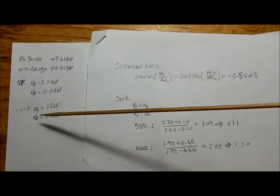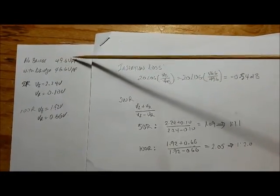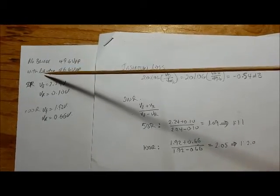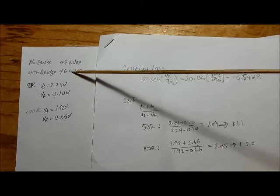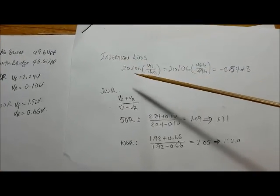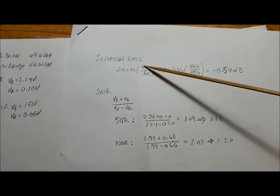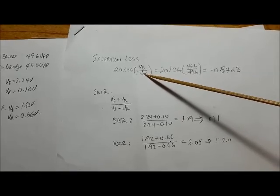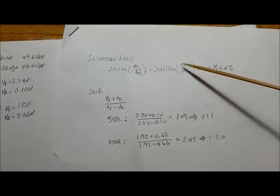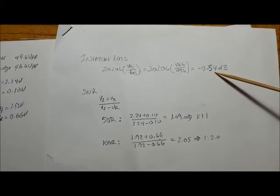I'd like to go through the calculations now for the bridge. So I've got my data, the voltages I measured here. This is the voltage at the antenna with no bridge, and here's the voltage at the antenna with the bridge. So from that we can calculate the insertion loss, which is simply 20 log of the voltage with the bridge compared to the voltage without the bridge. And that comes out, if you do the calculation, to be approximately 0.54 dB.